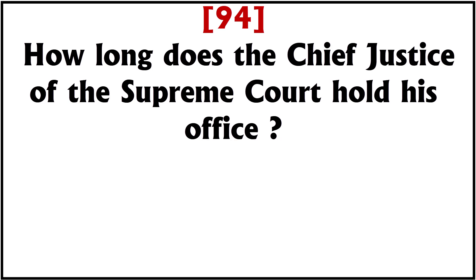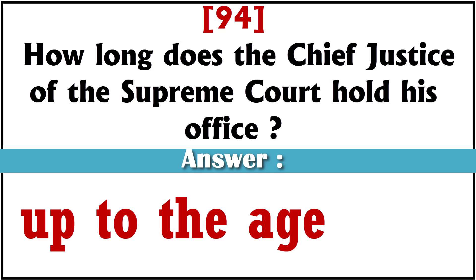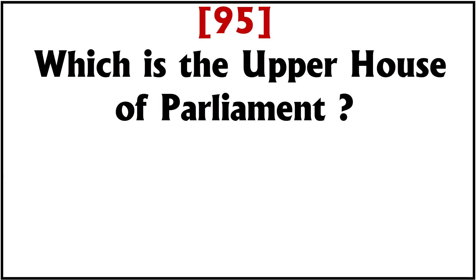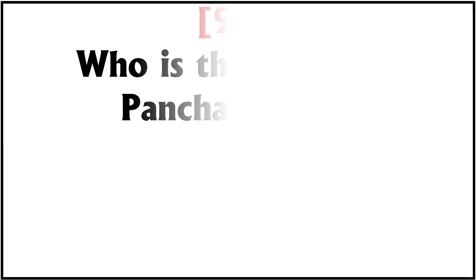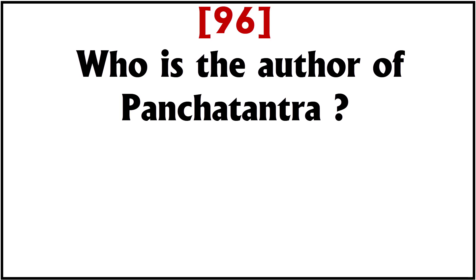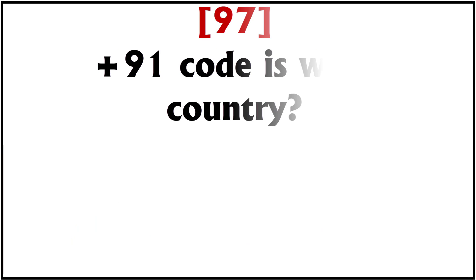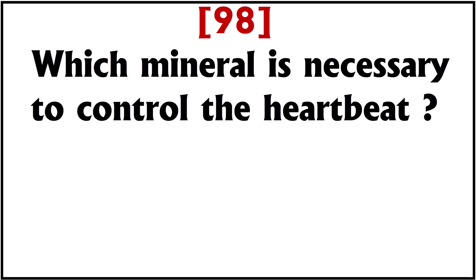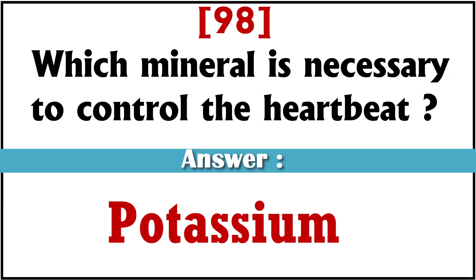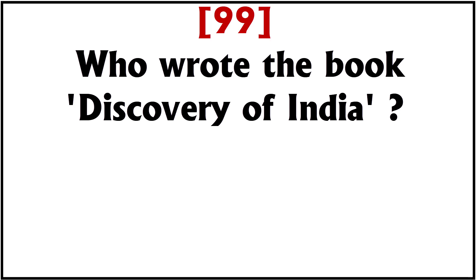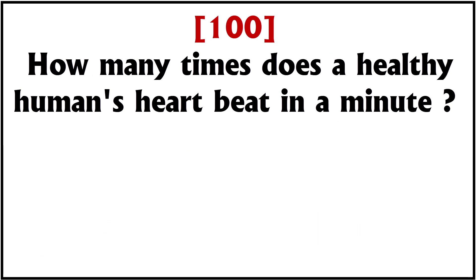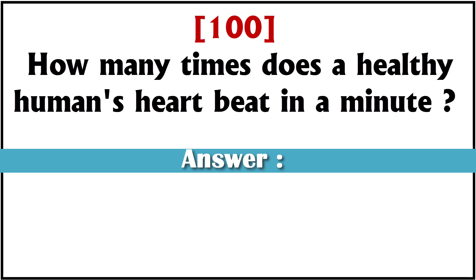How long does the Chief Justice of the Supreme Court hold his office? Up to the age of 65. Which is the upper house of Parliament? Rajya Sabha. Who is the author of Panchatantra? Vishnu Sharma. Plus 91 code is which country? India. Which mineral is necessary to control the heartbeat? Potassium. Who wrote the book Discovery of India? Jawaharlal Nehru. How many times does a healthy human's heart beat in a minute? 72 times.